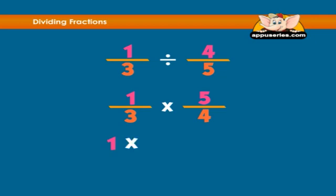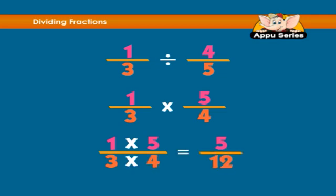So 1 times 5 is 5, and 3 times 4 is 12. So the answer is 5 twelfths, or 5 over 12.